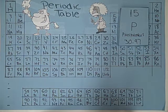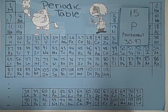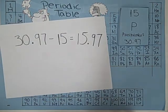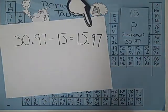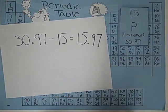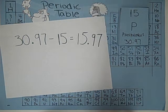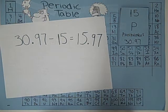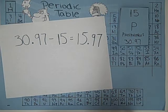In this case, we have a decimal number from the mass. If 30.97 minus 15 equals 15.97, we have a number with a decimal. To round off: if the decimal is above .5, round up to the nearest whole number, which is going to be 16. If it is less than .5, you would round down to the nearest whole number, which would be 15. In this case, it would be 16 as the number of neutrons.